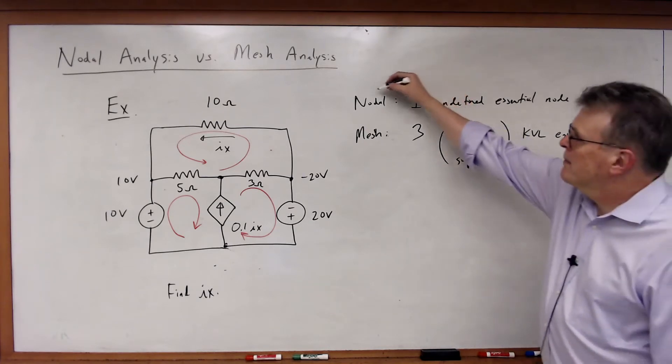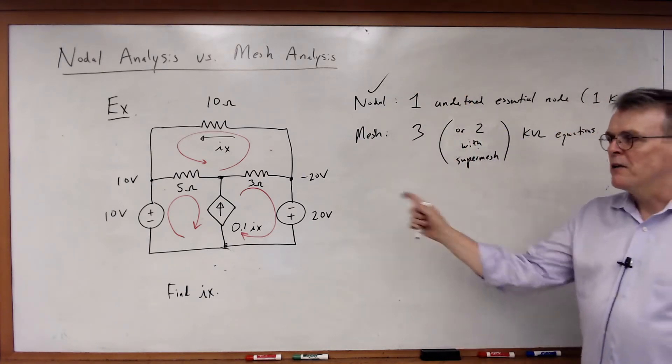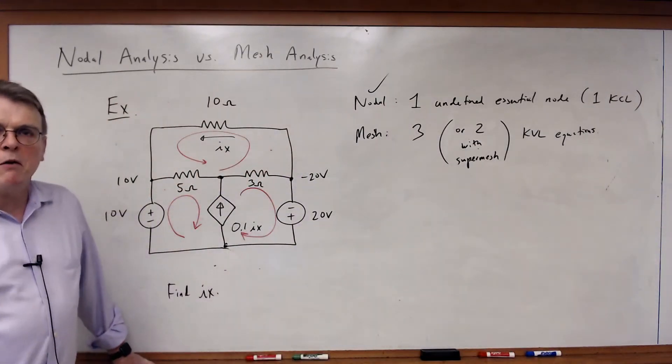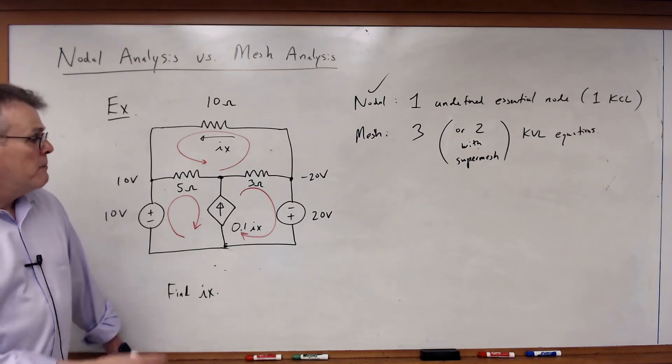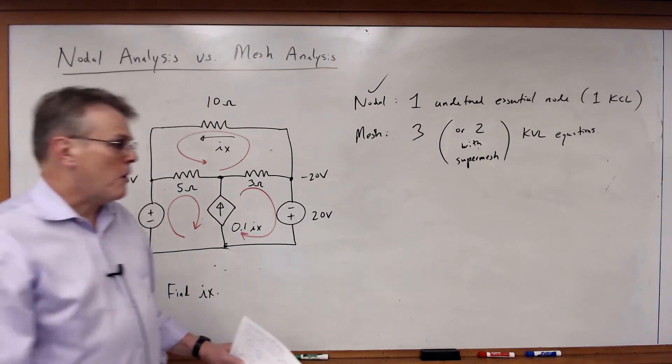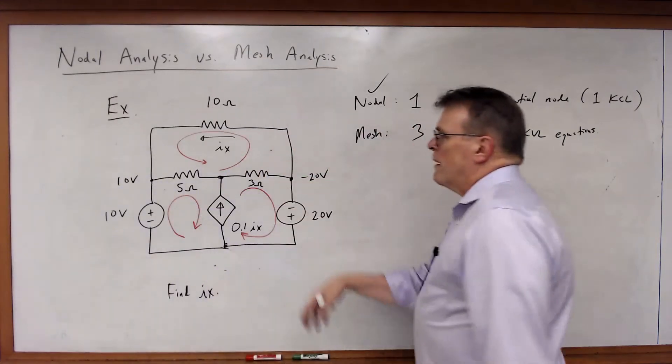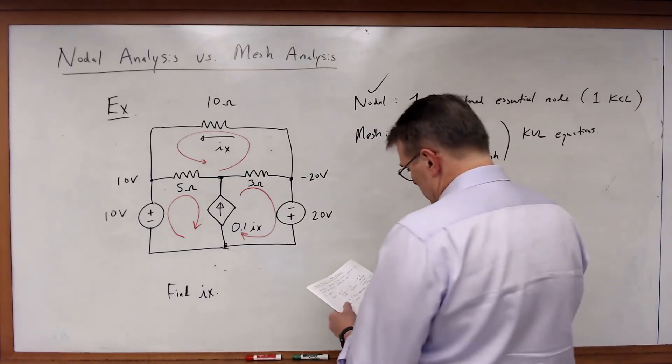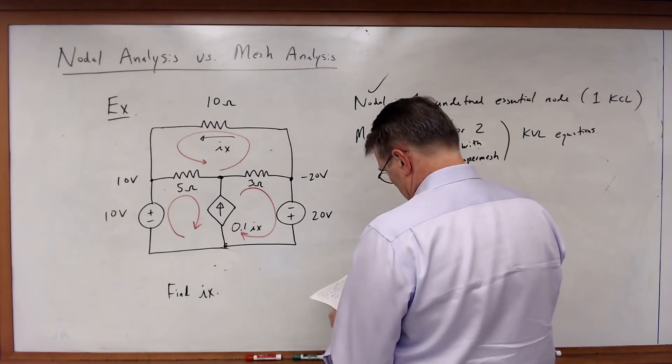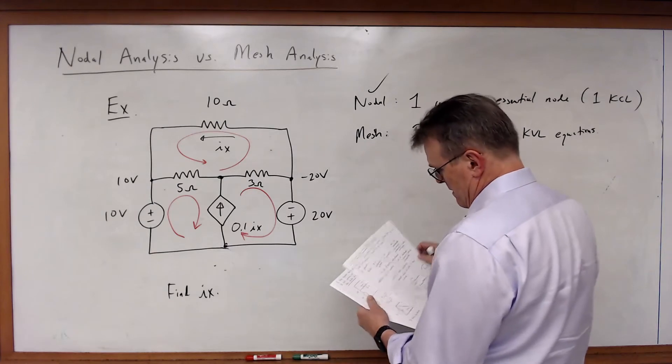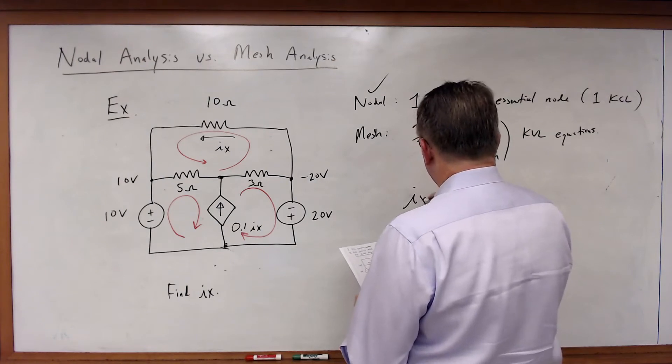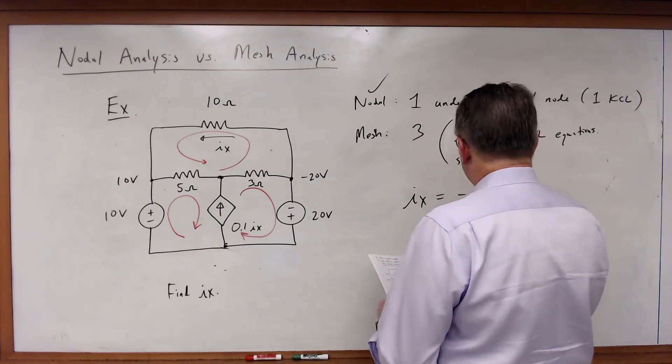So what do you pick? Obviously, you pick nodal analysis. Nodal analysis will give you the simplest solution with only one nodal equation, one KCL equation, plus of course you'll also need your dependent source variable equation as well. So I'm not going to bother to write the equations to work this out, but I'll go ahead and tell you, if you're interested, that in this case, Ix will be equal to minus three amps.